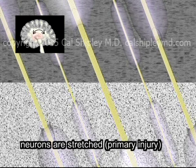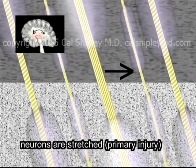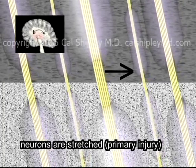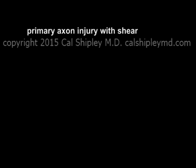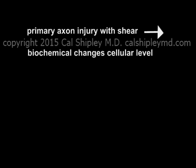Stretching of the axons is known as primary injury, and this stretching — rather than actual tearing of the axons during shear — is considered to be the basis for diffuse axonal injury. Within hours to days after stretching of the nerve axons during primary injury, biochemical changes at the cellular level result in loss of axonal function.